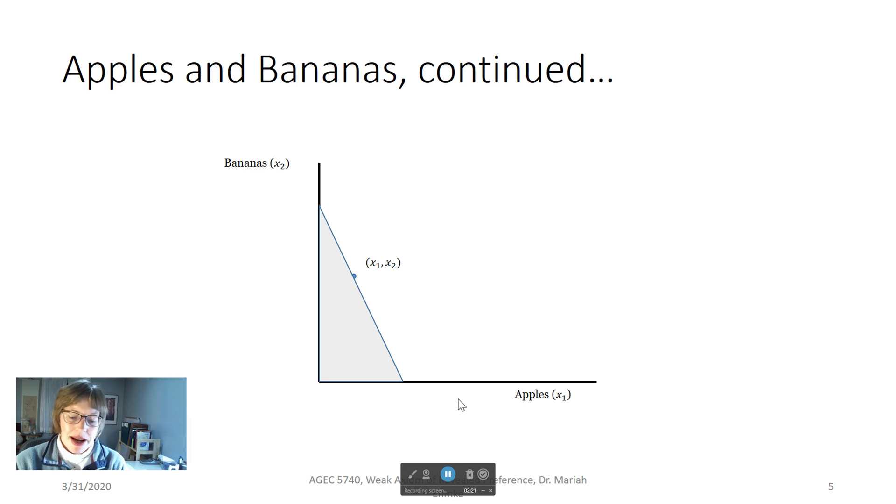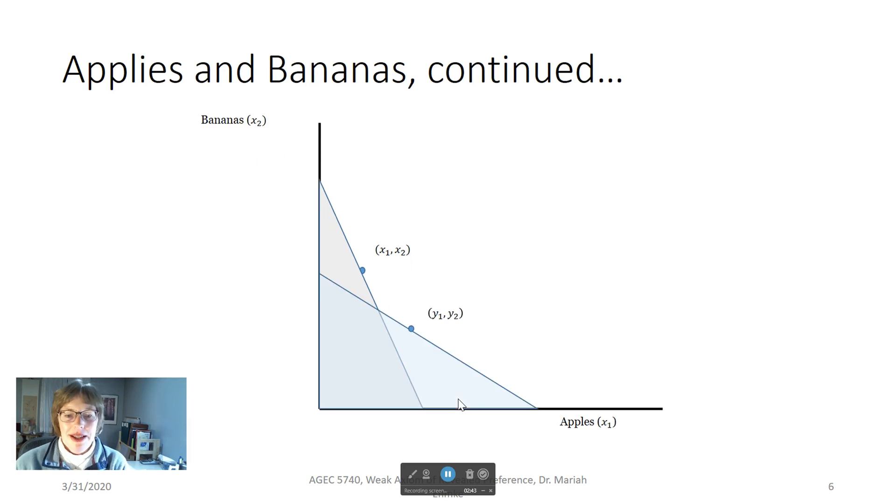Now assume market prices change, but you are still making the same income, so income is held constant. The price of apples may decline, and then the price of bananas increase, but remember the income is staying the same. You will have a new price line and feasible set that is now overlaid on top of the old feasible set, something like this.